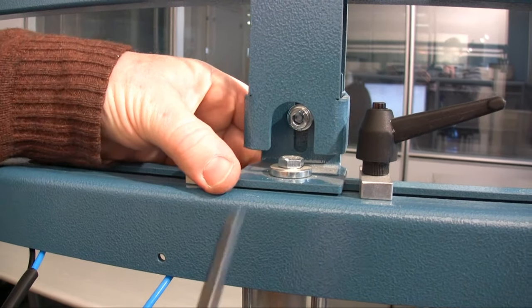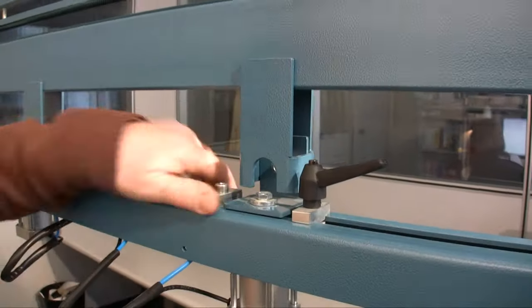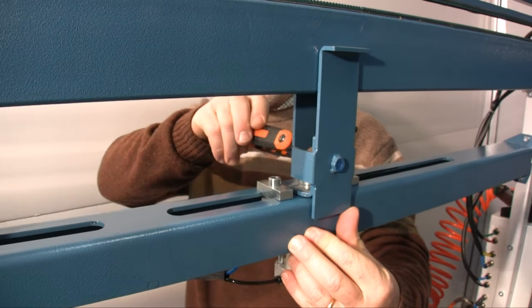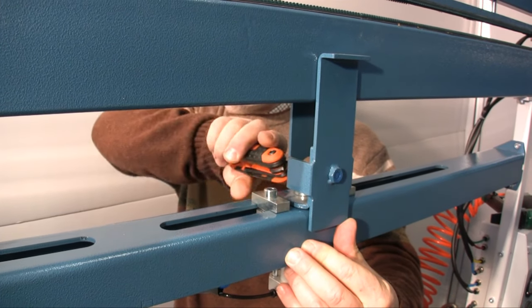To change the height, unscrew the screw which is found behind the shelf, change manually the vertical position of the shelf, and then screw the screw to fix it in its new position.